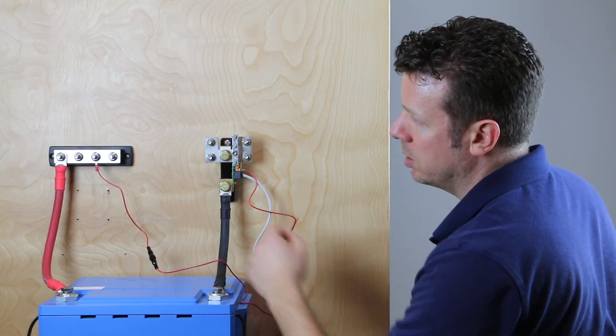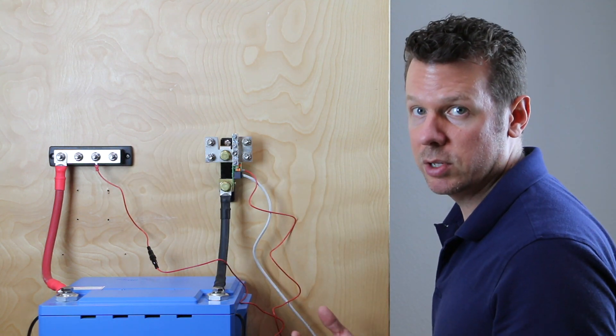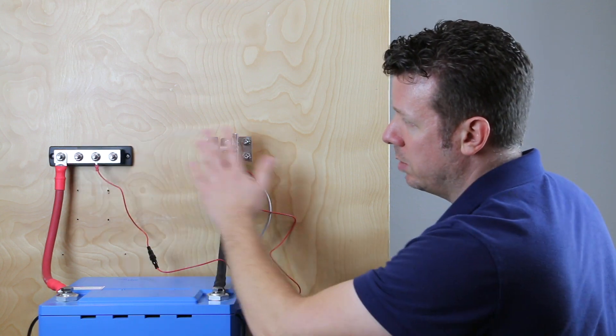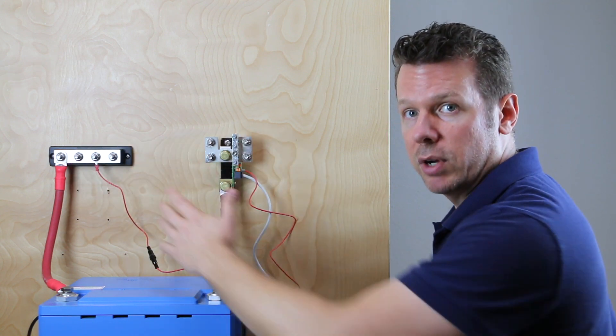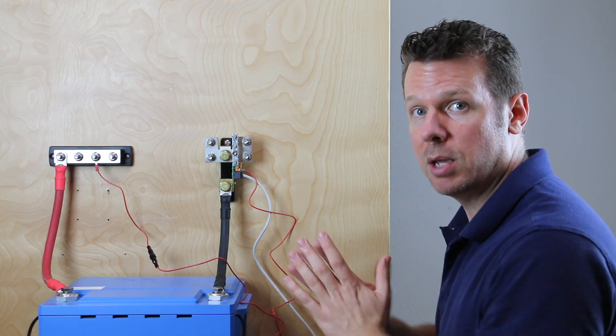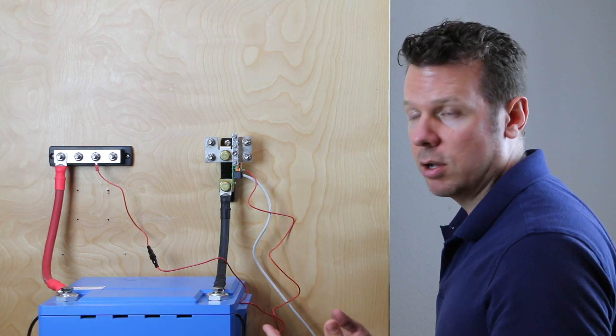So it's the same on the positive. These are both bus bars, they just are different shapes, but they do the same job. Basically they're distribution points for positive and negative. And I will say over here I would typically add a fuse and a switch, but for our demonstration I'm keeping it simple so that you can see how the battery monitor itself is wired.